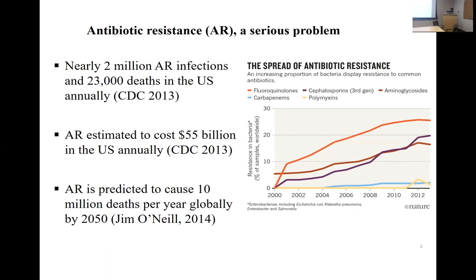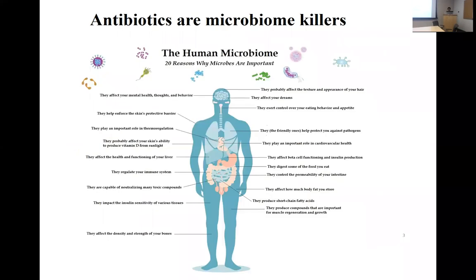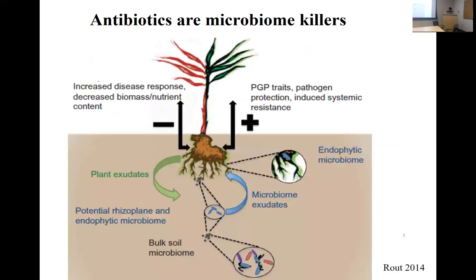We can certainly say that antibiotic resistance is a big problem we're facing right now. Another issue with antibiotics is that they have a broad spectrum of activity — they don't just target the pathogens we want to target but kill almost everything. As we understand more about the importance of the microbiome for human health and for plants, saving these microbiomes is another priority.